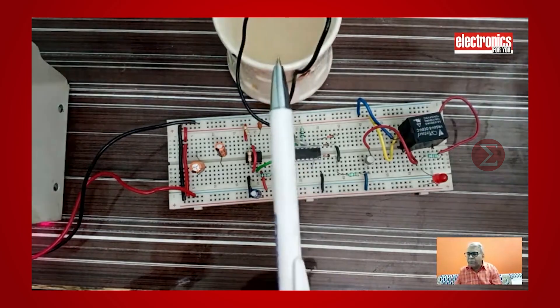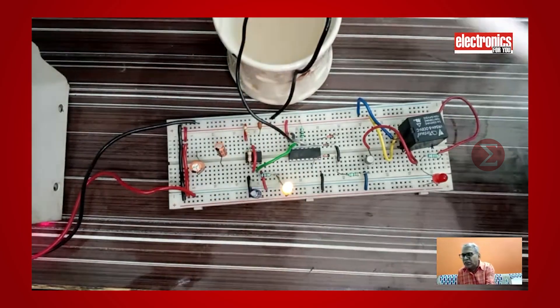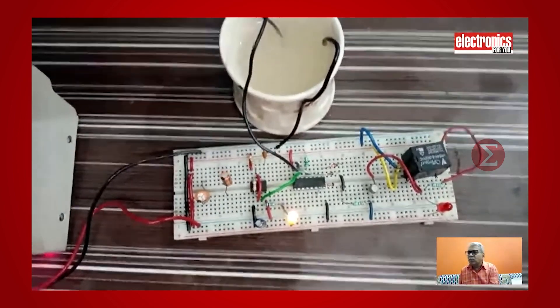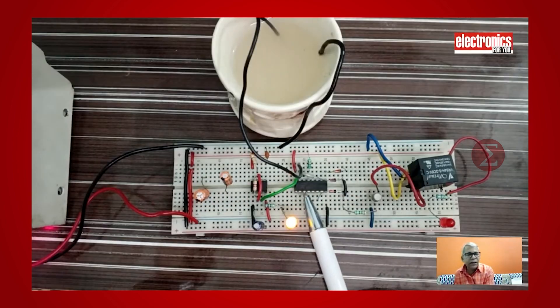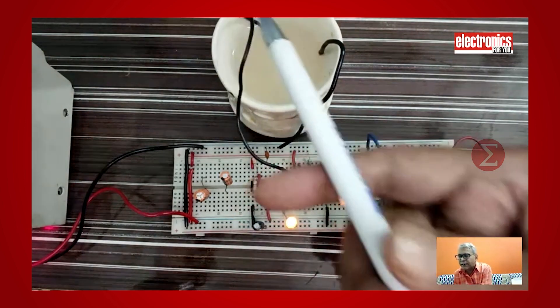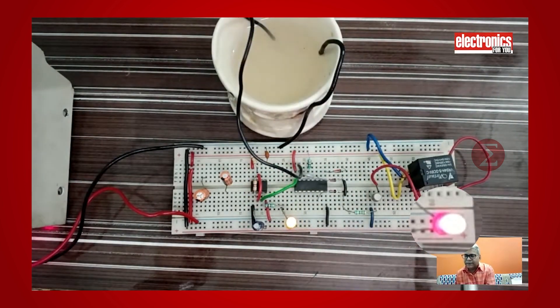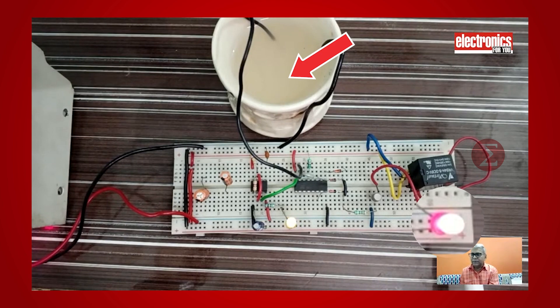For testing, we have taken some water in a bucket and immerse the water level sensor in that water. When there is water in a cooler, the decade counter will get its clock and circuit is functional. You can see this LED is on when water is in the bucket.